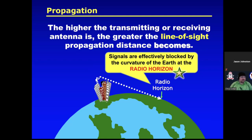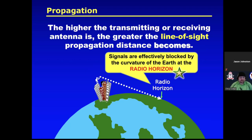That's why if you're driving through downtown Dallas and look at a tall building like the green building, the entire top is lined with antennas — because the higher the antenna, the further your range. They are effectively blocked by the curvature of the Earth at the radial horizon, which is just a little bit further than your visual horizon.